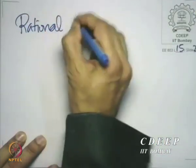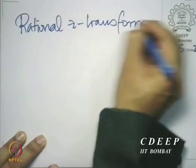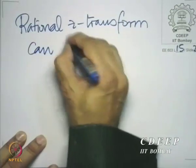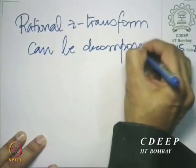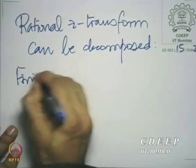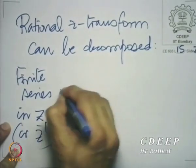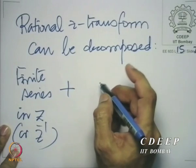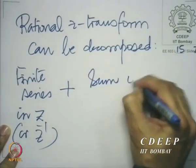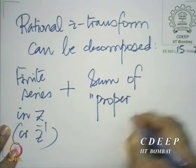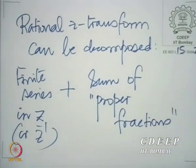In general, any rational Z transform can be decomposed as a finite series in Z or Z inverse, plus a sum of terms called proper fractions. I will use the term proper fraction in a more generalized sense here.